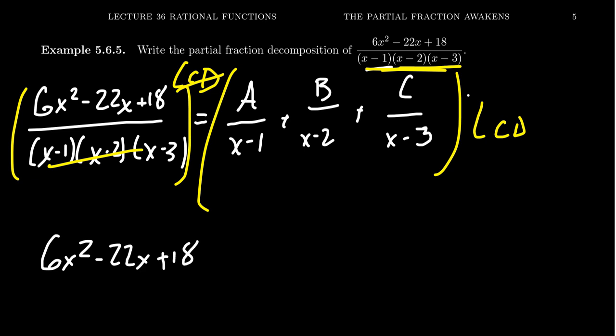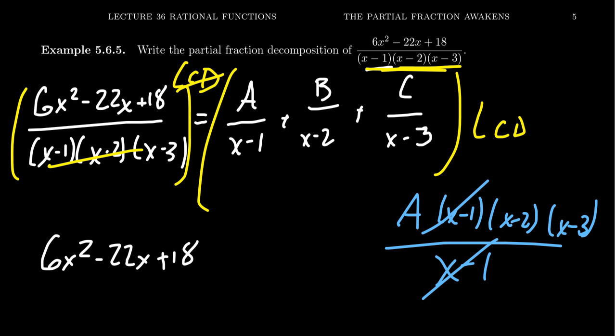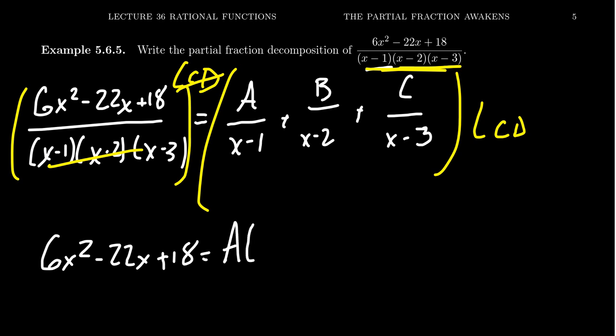When you distribute the LCD onto these pieces, you're going to see something that will look like the following. When A times x minus 1, x minus 2, x minus 3, sits above x minus 1, the x minus 1 is going to cancel, and you're going to see what's left are those factors which the partial fraction was missing from the LCD. It had an x minus 1, so that cancels out. So what's left is the stuff that it was missing. So you end up with A times x minus 2 times x minus 3, the thing that was missing.